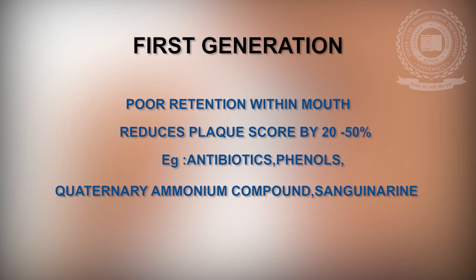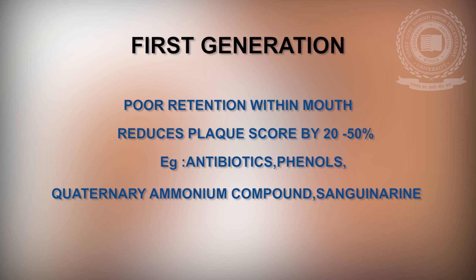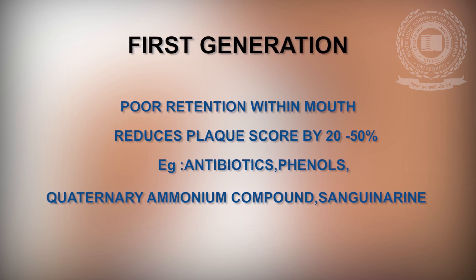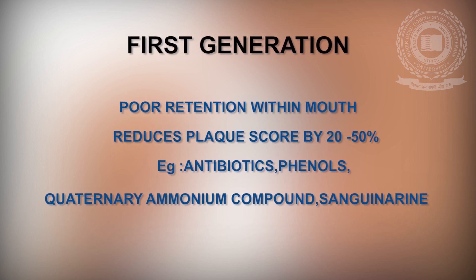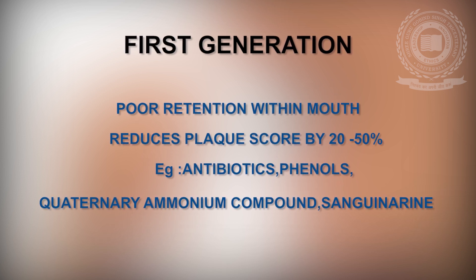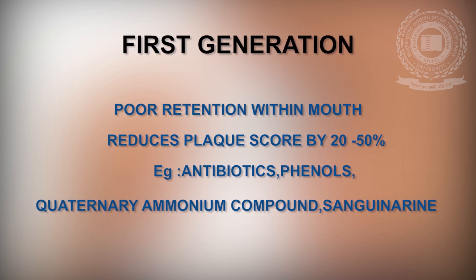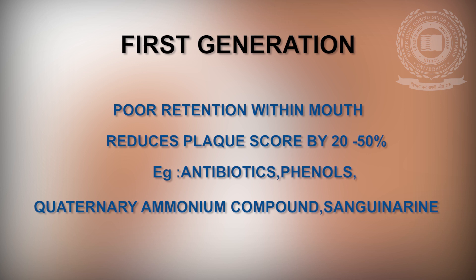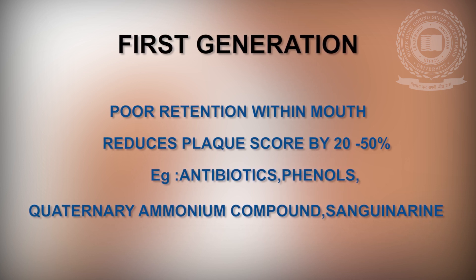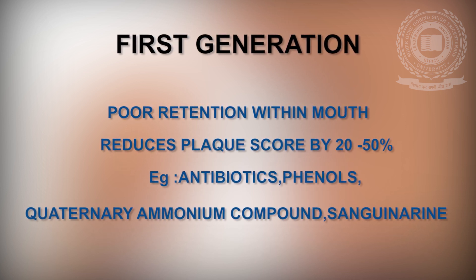The 1st generation anti-plaque agents have the potential to reduce plaque scores by only about 20–50% because they exhibit poor retention within the mouth. Examples include antibiotics, phenols, quaternary ammonium compounds, and sanguinarine.